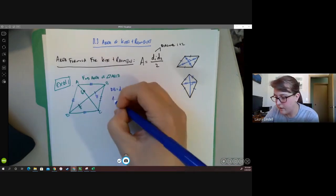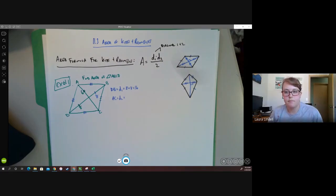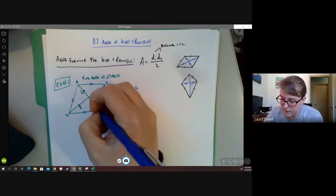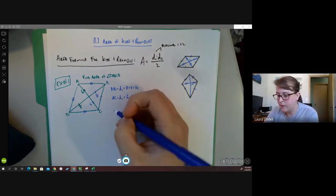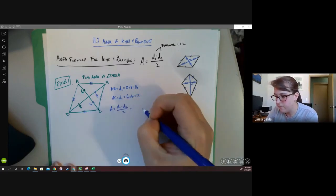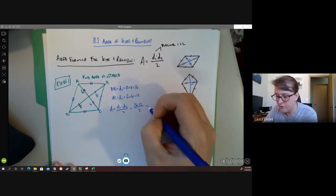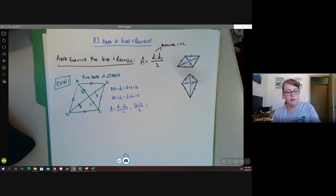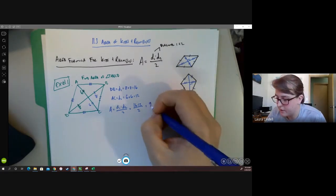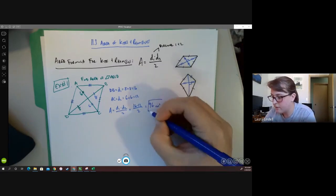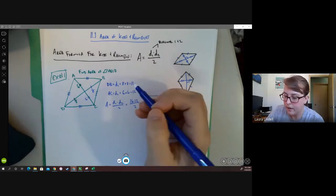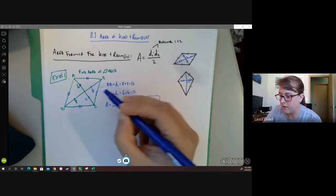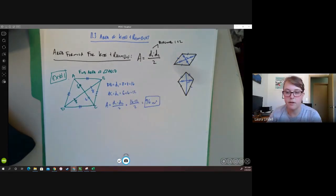We'll call the other diagonal AC — that'll be diagonal two. What's the length of diagonal two? Twelve — because if this is six, then this is also six, and six plus six is 12. So now we have our diagonals, and we know that area equals diagonal one times diagonal two divided by two, which is 16 times 12 divided by 2, which equals 96 square units. That's the simple case where we are given both of our diagonals — we just had to recognize eight plus eight is 16 and six plus six is 12.